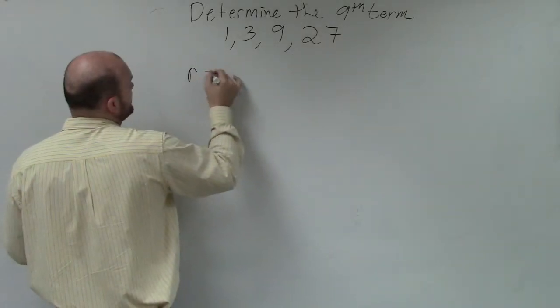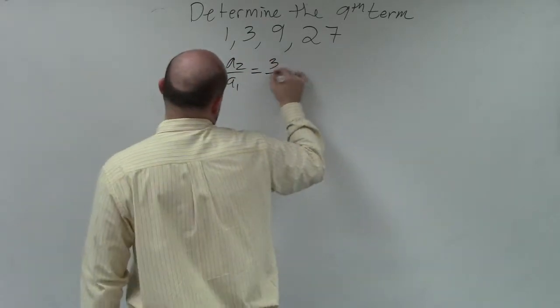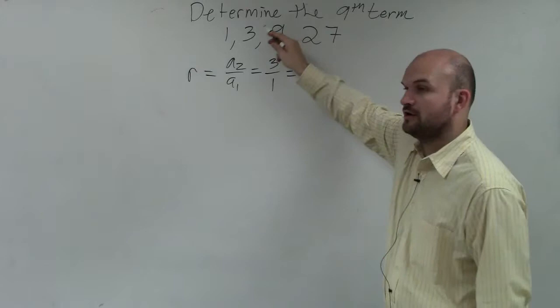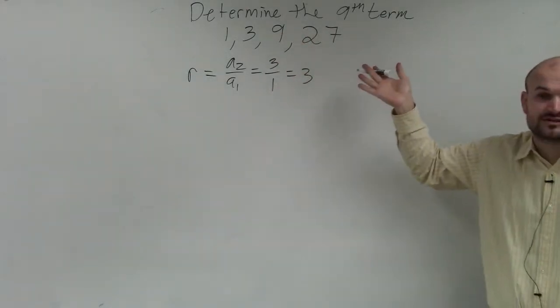We notice that there is a common ratio. If I do a2 over a1, I get 3 over 1, which is 3. Is there a common ratio of 3 between each and every term? Yes. So therefore, this is a geometric sequence.